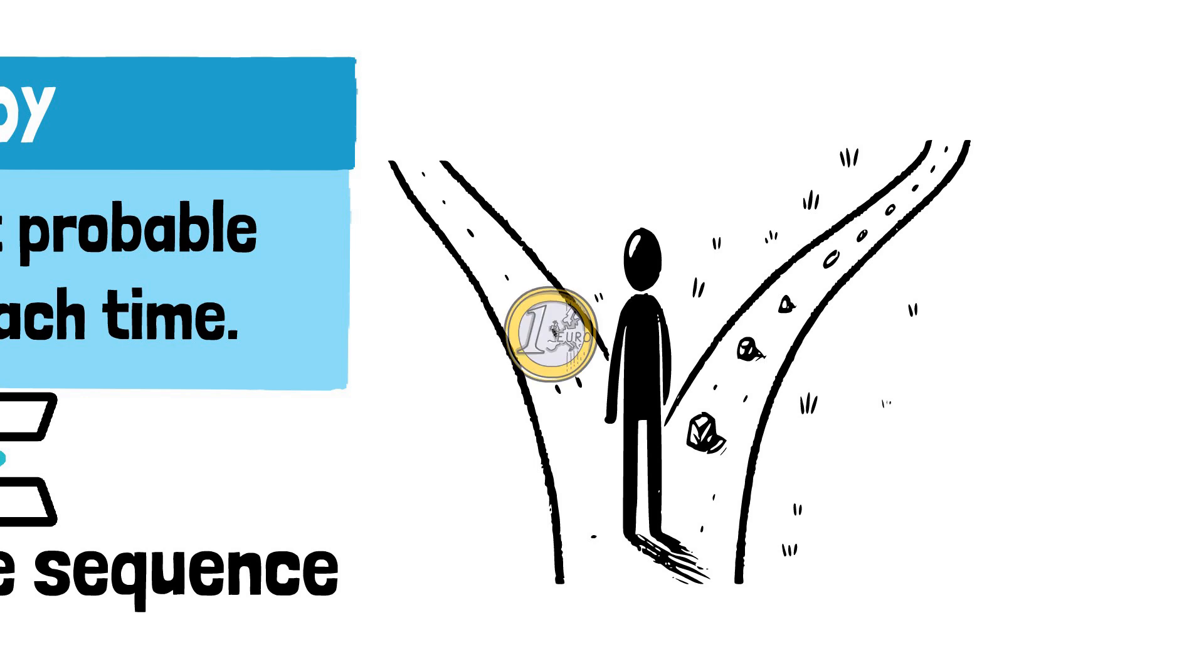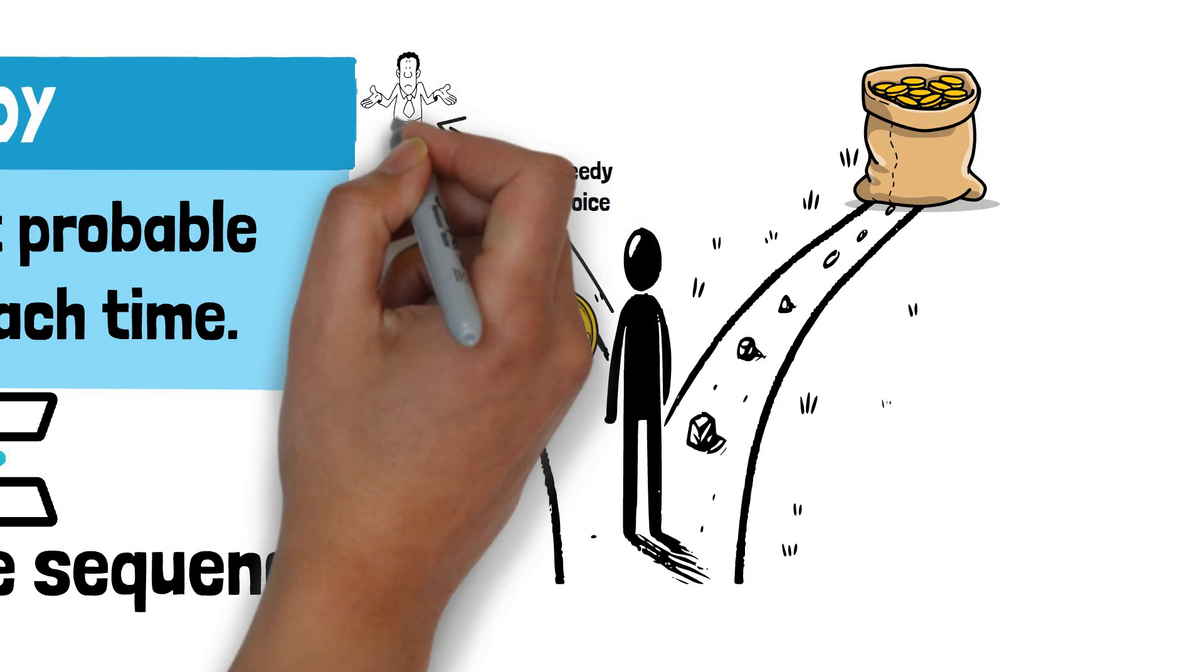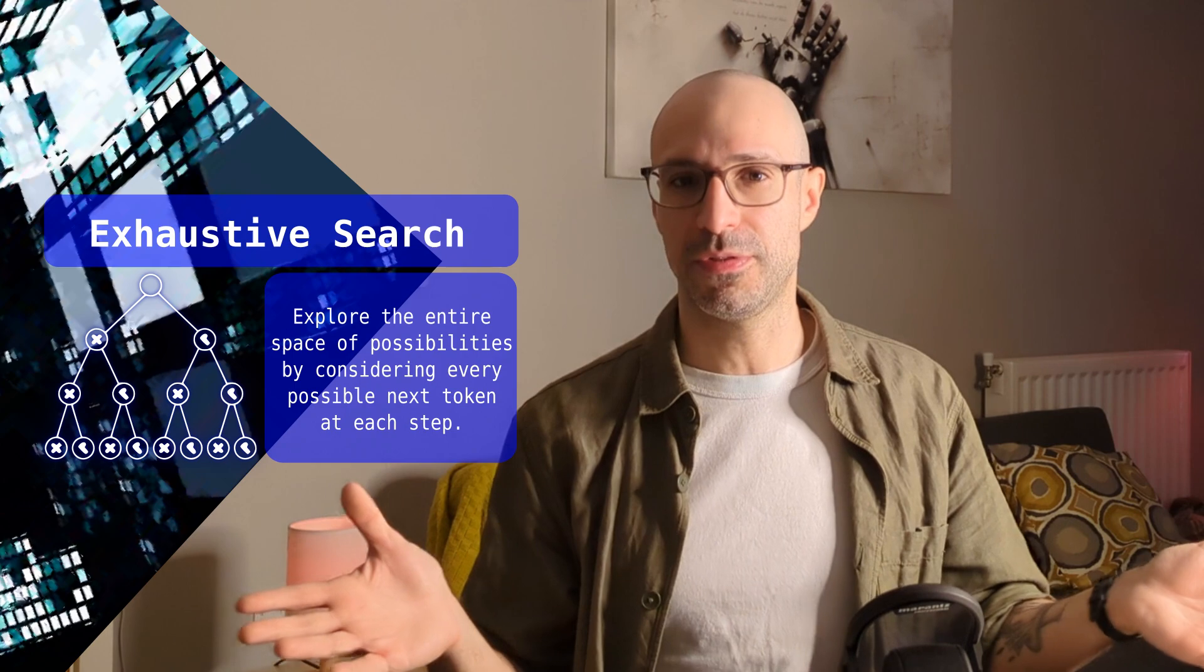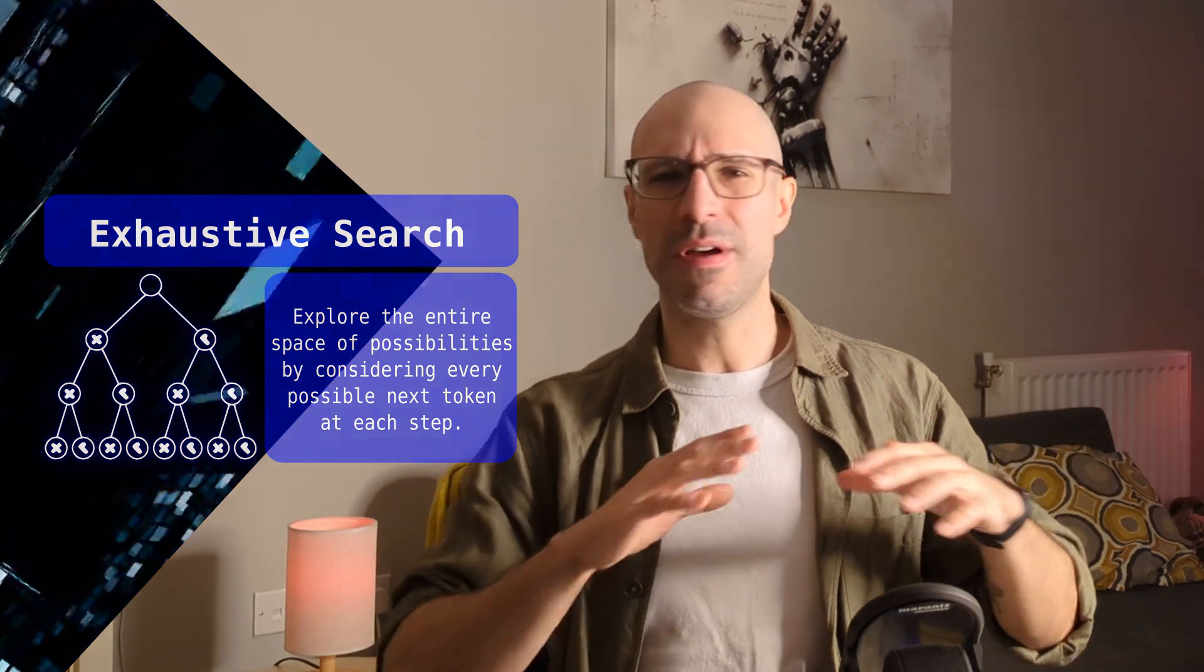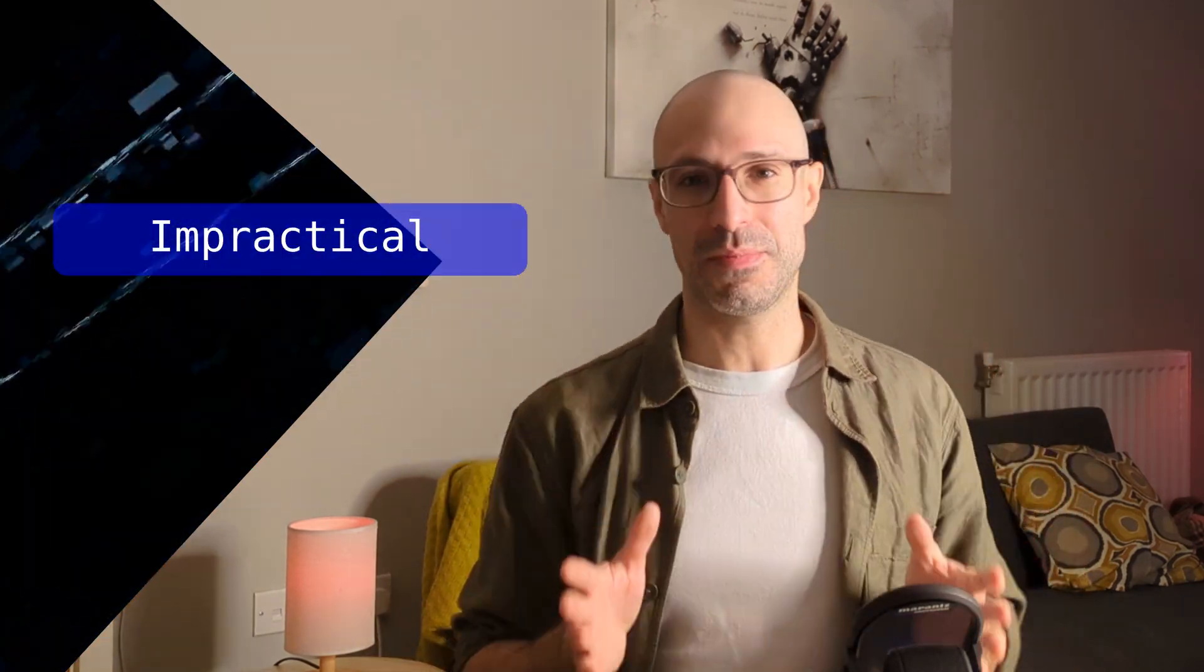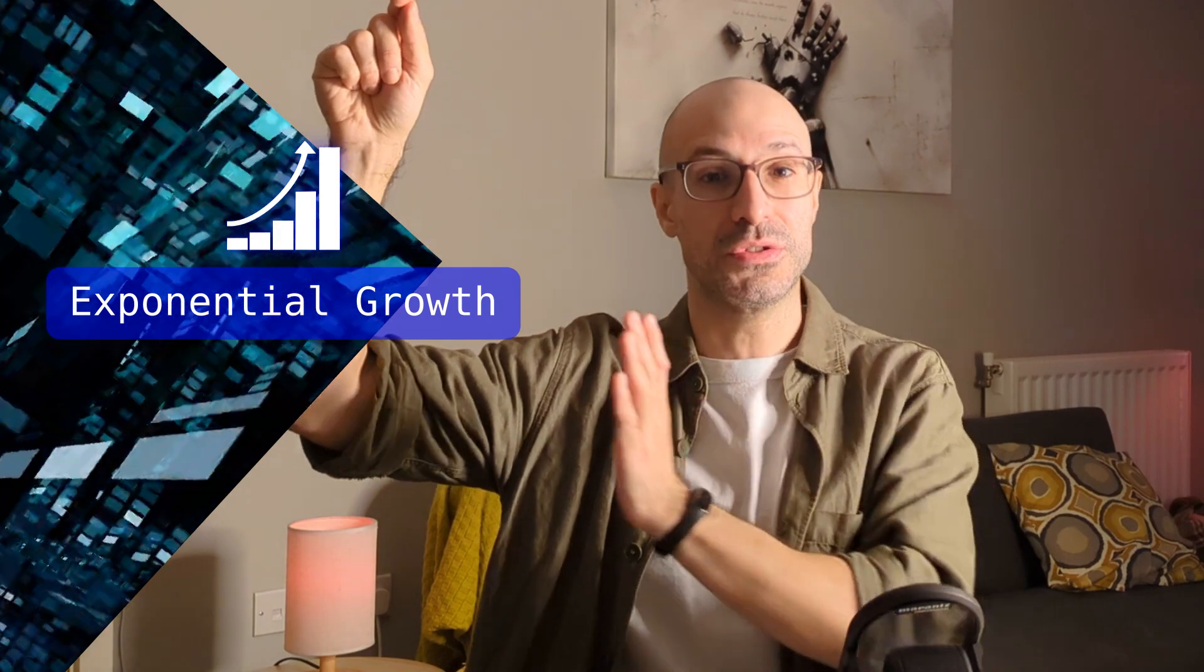A token that has a high probability at one step might lead the model down an overall less optimal path later on. The sure way to find the absolutely best sequence is to do an exhaustive search by looking at all combinations. Now, this means exploring the entire space of possibilities by considering every possible next token at every step. However, this method is highly impractical for most real-world applications.